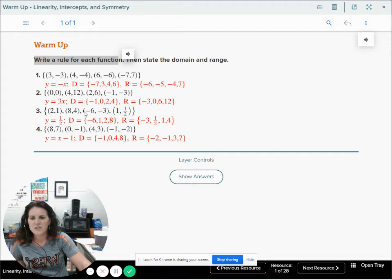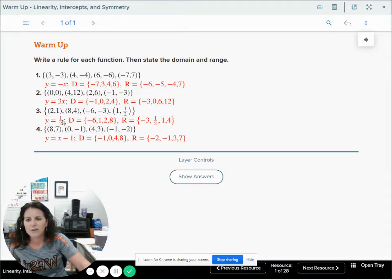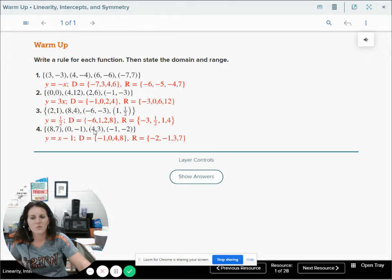If I plug in 3, 3 times negative 1 becomes negative 3. Same thing with 4, I get out negative 4. Plug in 6, I get out negative 6. Plug in 7, I have negative 7. So that works. You can check each of the following: y equals 3x, y equals half x. 8 take away 1 is 7, 0 take away 1 is negative 1, 4 take away 1 is 3, so it works for each of those.